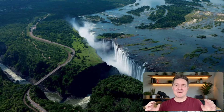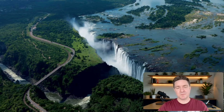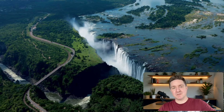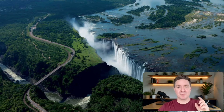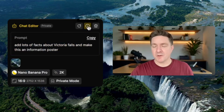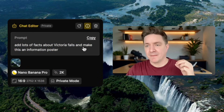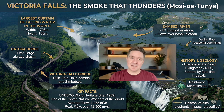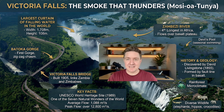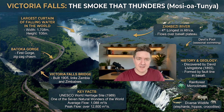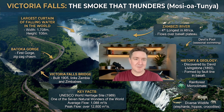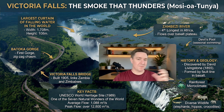One of the incredible things you can do within Nano Banana Pro is take a picture like this. I took this picture of Victoria Falls — an aerial view showing Zimbabwe on one side and Zambia on the other. I've been here quite a few times; it's one of the most amazing places on earth. I said to Nano Banana Pro: add lots of facts about Victoria Falls and make this an information poster. This is the output it gave me. It's put all of these facts on the screen — Victoria Falls, 'the smoke that thunders,' along with the width of the curtain of water, which is different at different times of year depending on whether it's in flood or not.